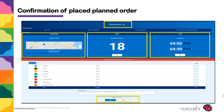You can edit the planned order up until the council-designated deadline for placing planned orders for the upcoming week. Your council will also set the number of planned orders a troop can enter, and when that limit has been reached, a message will appear: "Can't Create Order — maximum number of planned orders is exceeded for the week."